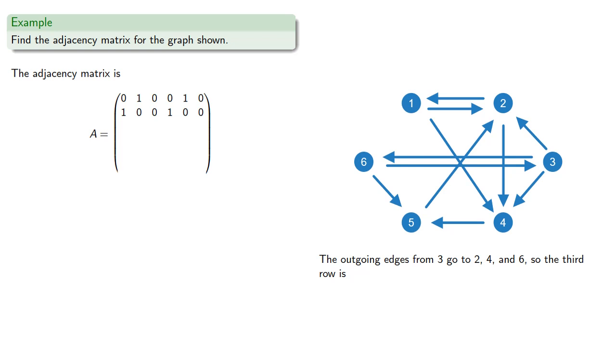The outgoing edges from vertex 3 go to vertices 2, 4, and 6, so the 3rd row will be all 0s except those positions, and we can find the remaining rows similarly.